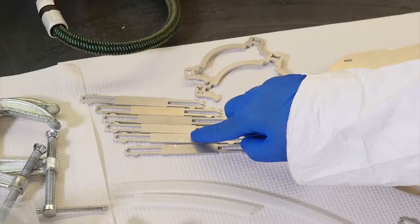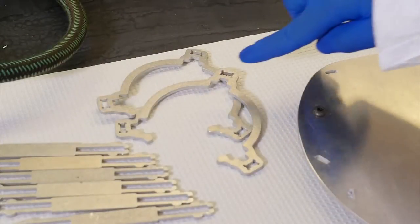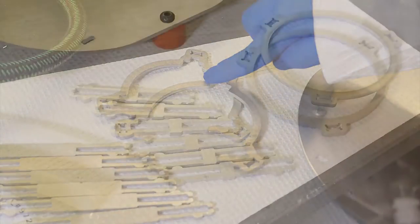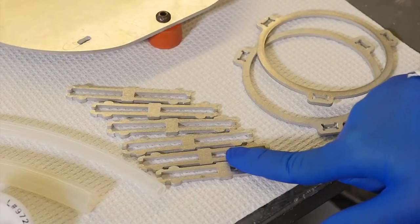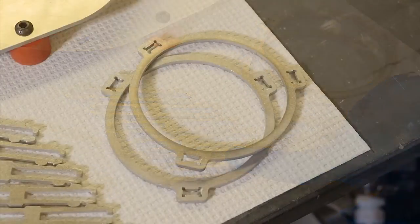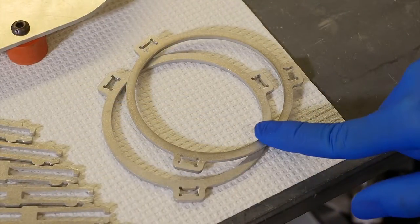Components include tall legs for the filter stand, semi-circular pieces for the filter stand, short legs for the collection cup stand, and circular pieces for the collection cup stand.